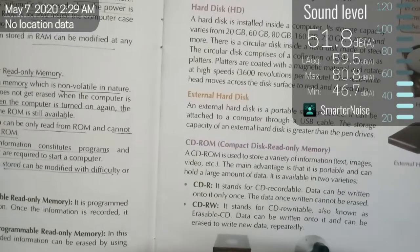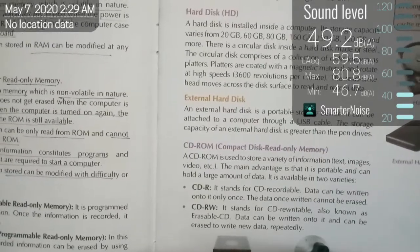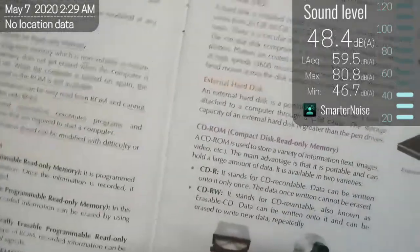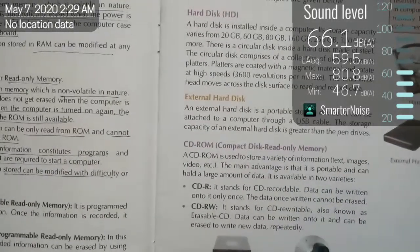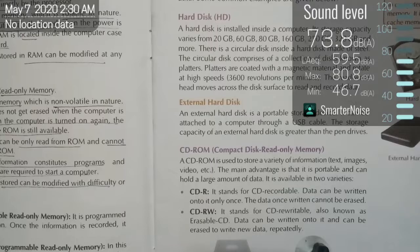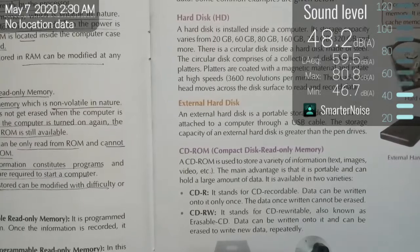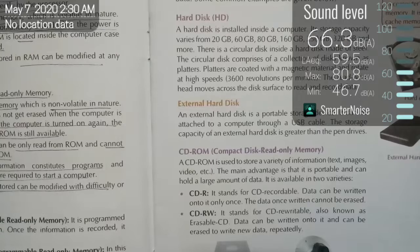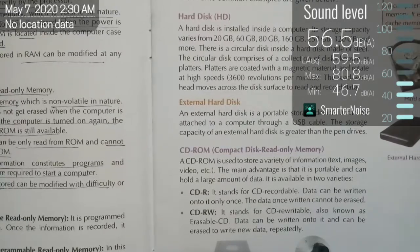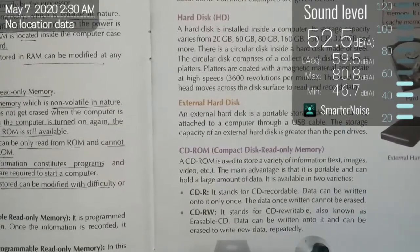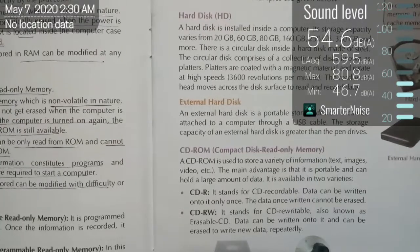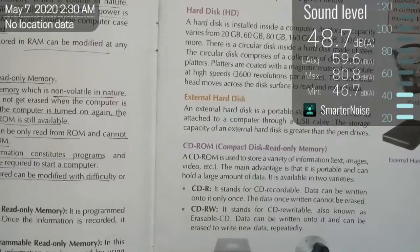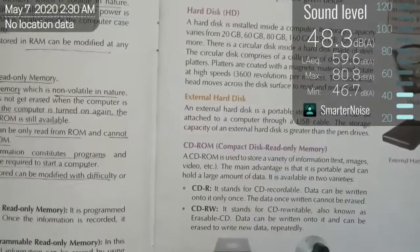Next we have an external hard disk. An external hard disk is a portable storage device that can be attached to a computer through a USB. The storage capacity of an external hard disk is greater than a pen drive. The hard disk inside the CPU is fixed, but the external hard disk can be carried wherever you want.